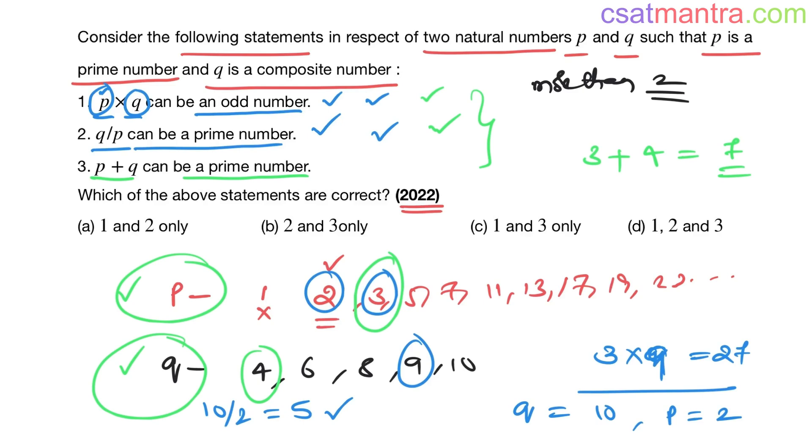They need not be same, that's why you took different values. Now all the three statements are true, there is possibility. These are independent statements, no relationship between them. You can take different values and prove them. So option D is our answer.